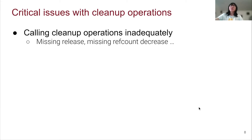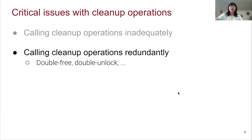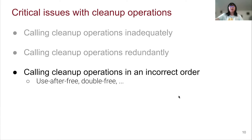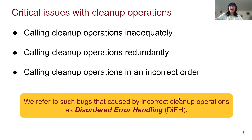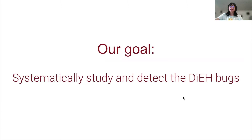However, if we use cleanup operations incorrectly, there will be some critical issues. If we call cleanup operations inadequately, there will be missing release or missing ref count decrease bugs — the kind of problem most previous work tries to solve. If we call cleanup operations redundantly, it will generate double-free or double-unlock bugs. Furthermore, if we call cleanup operations in an incorrect order, there will be use-after-free or double-free-like bugs. In this project, we refer to such bugs caused by incorrect cleanup operations as disordered error handling bugs. The goal of this project is to systematically study and detect disordered error handling bugs.